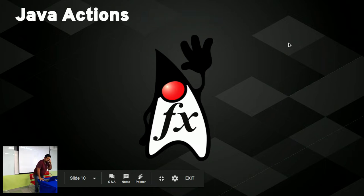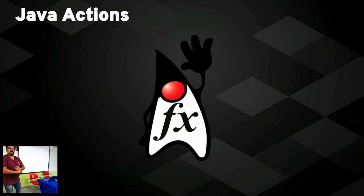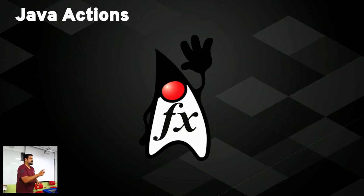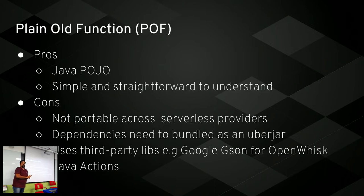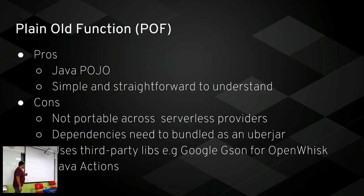Java actions work similarly to JavaScript actions but use traditional Java. It's a single class with a different signature for the main method - a JSON object input and a JSON object output as parameters. Plain old Java functions are simple POJO single-class functions, straightforward to understand. The problem is they're not portable across serverless providers like AWS Lambda or Azure Functions.